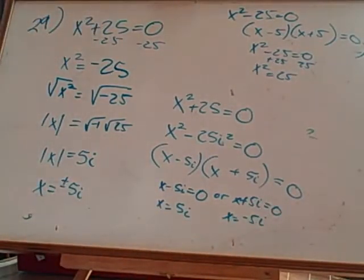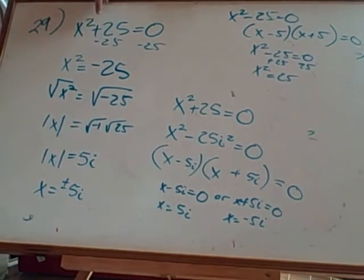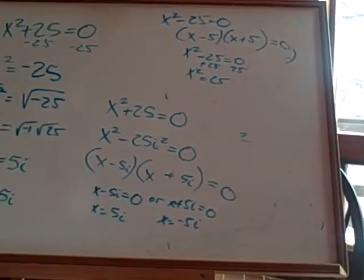Isn't that cool? So if you see plus a perfect square, you can change it to minus a perfect square times i², and then you'll be set.